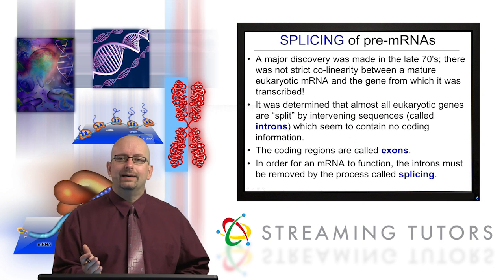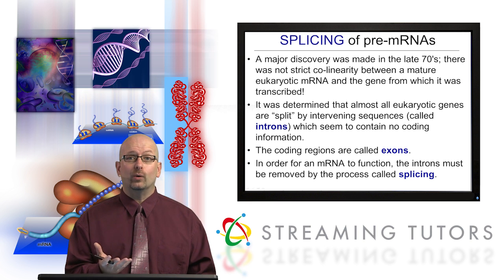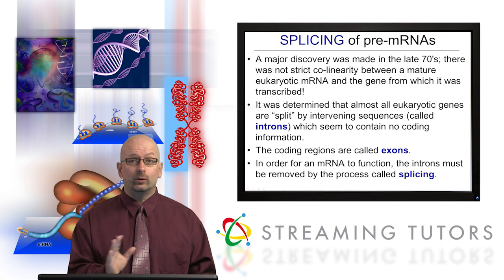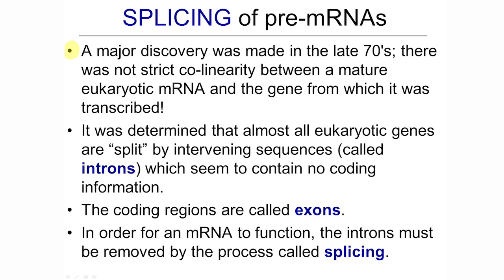Now, splicing is probably the most interesting aspect of RNA processing, and most people think about splicing when they think of RNA processing. This only occurs in eukaryotes. In the late 1970s, a major discovery was made: there was not, as had been assumed, strict collinearity between a mature eukaryotic mRNA and the gene from which it was transcribed.